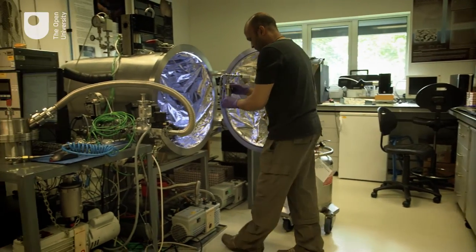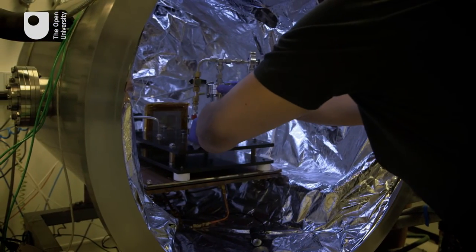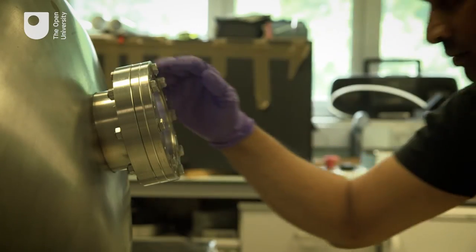There's two main instruments on the lander. One measures the entry profile as the lander goes through the atmosphere. My role on that is looking at the impact trace of the landing itself so we can see when it landed and we can see the kind of material it landed in by the force that goes through the lander when it lands.